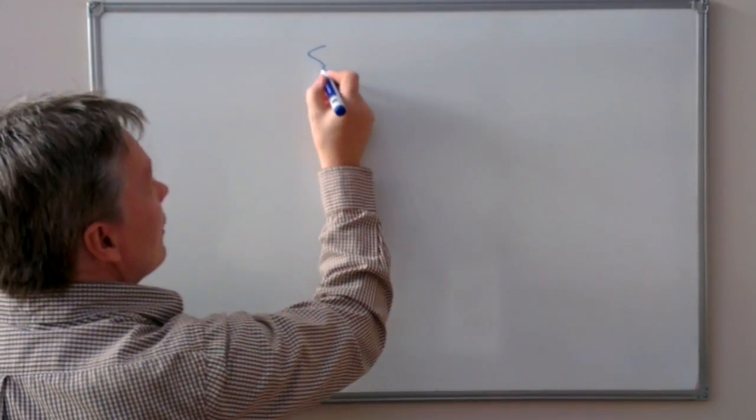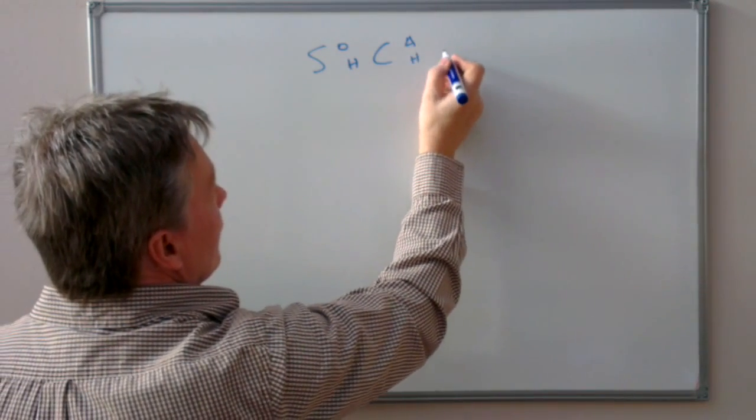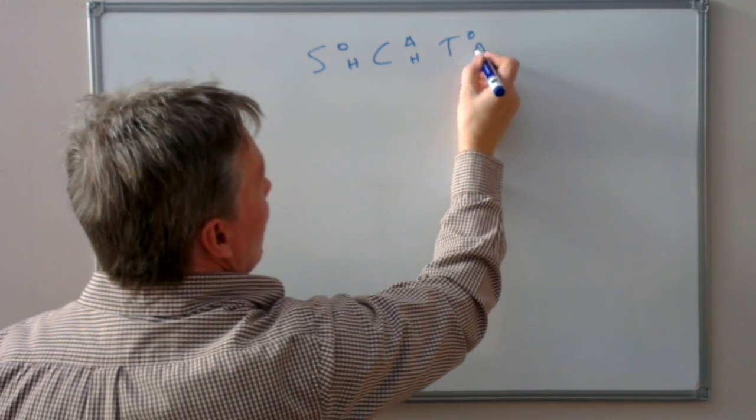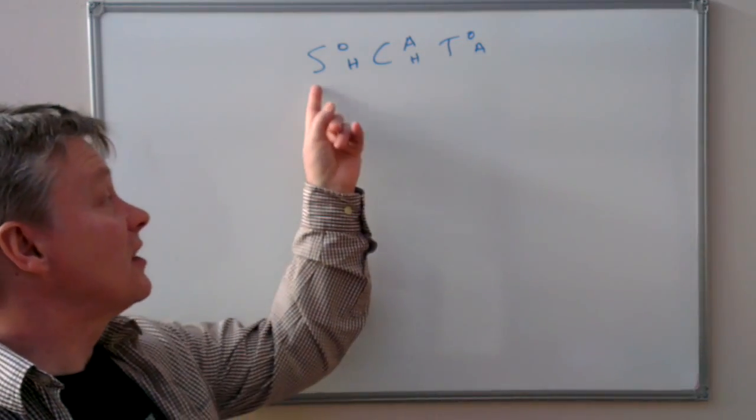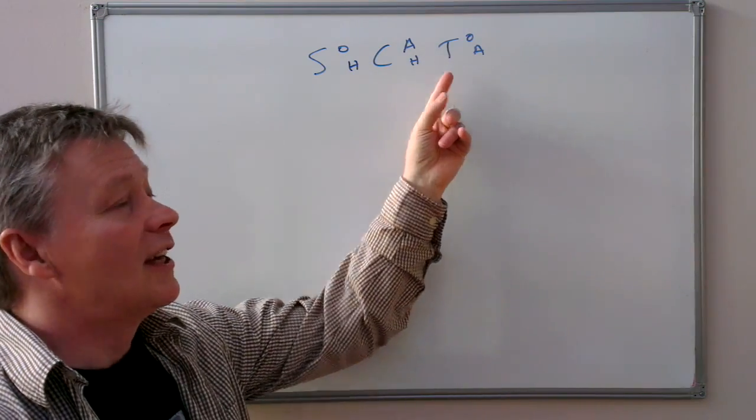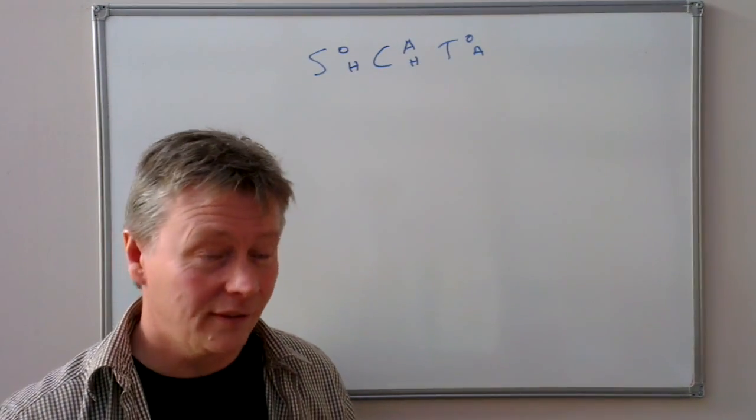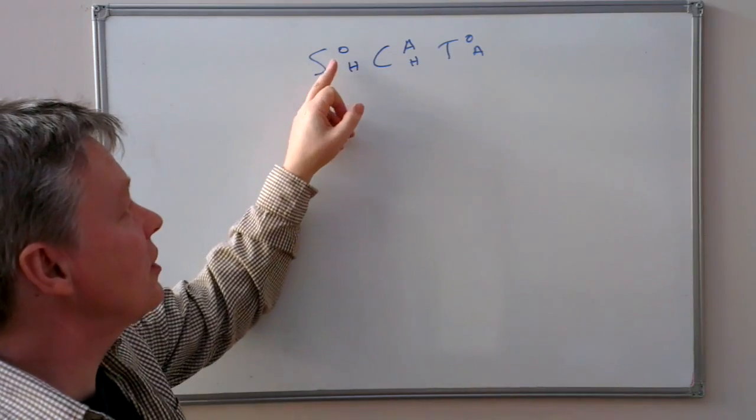SOHCAHTOA. What that means is: this is the sine of an angle, the cosine of an angle, and the tangent of an angle. It looks at a right angle triangle, whether the relationship is between the opposite and the hypotenuse, or the adjacent and hypotenuse, or the opposite and the adjacent.